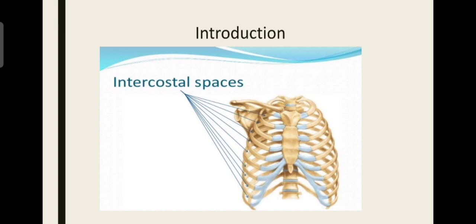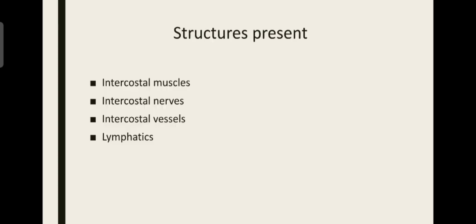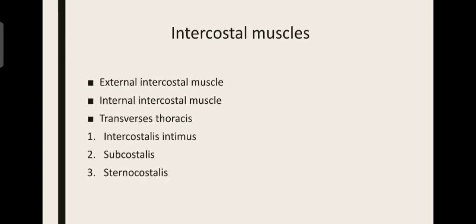That is all about the introduction. Let us go into the structures present. We have intercostal muscles, intercostal nerves, intercostal vessels — that is the artery and the vein — and also the lymphatics. First of all let us see about the intercostal muscles.